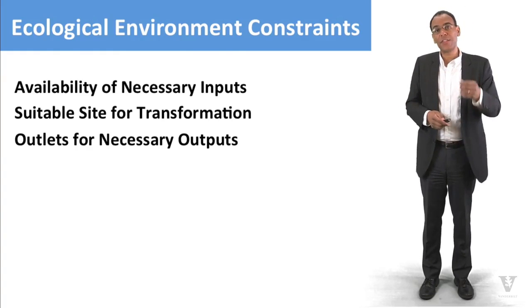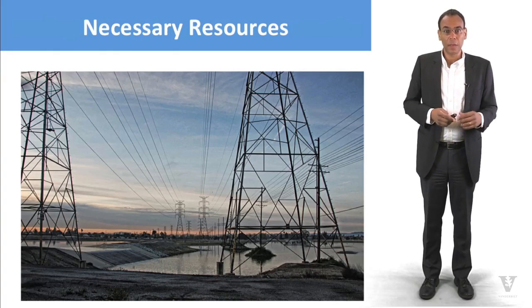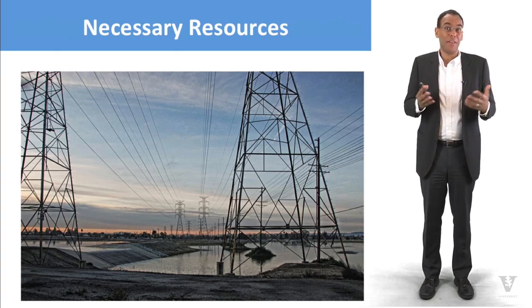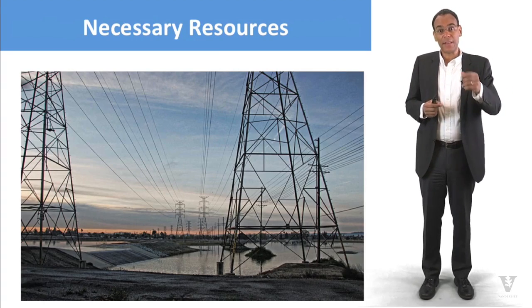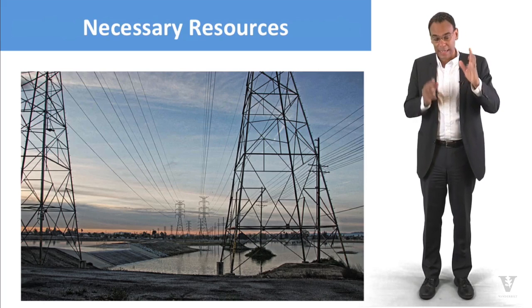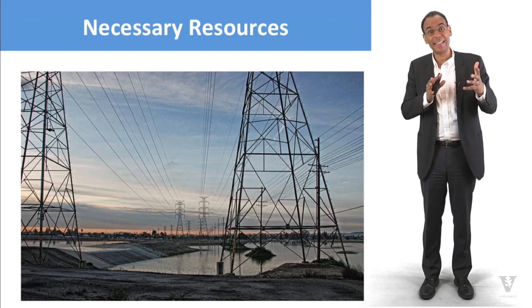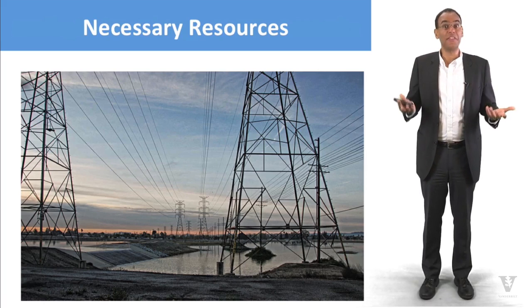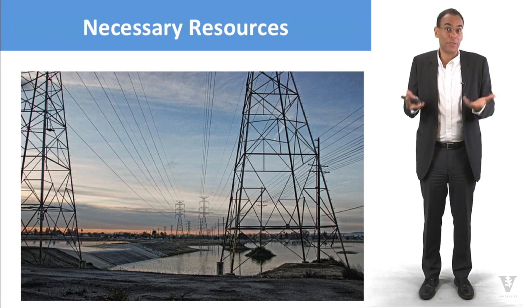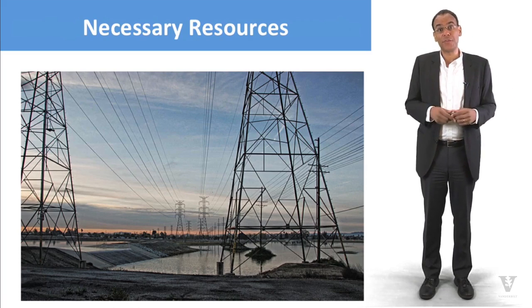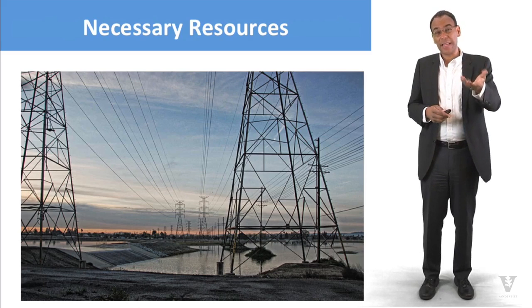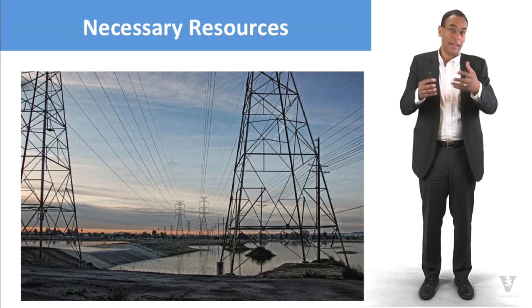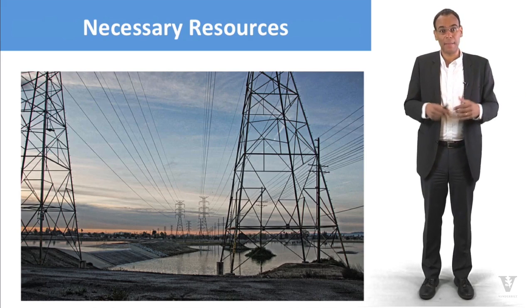If you're going to do certain activities that require a great deal of power, that becomes a constraint. In the case of the A12 aircraft, they needed lots of power to test the engines, so they needed to put the testing facility in a place where electricity was available. In fact, they had to do the testing at night because the city used too much power during the day.